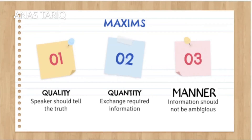The first one is the maxim of quality. According to this maxim, for successful communication speakers should tell the truth. Do not say those things which the speaker believes to be false, and also avoid saying that for which they lack evidence.